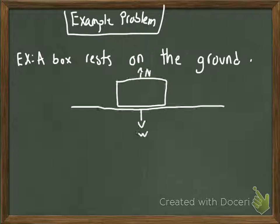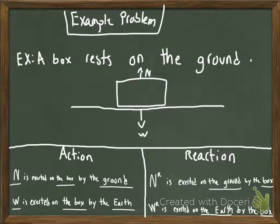Here is a free body diagram for the action forces in this scenario. The normal force points upwards while the weight points downwards towards the earth. Therefore, you would say for action forces that normal force is exerted on the box by the ground, and weight is exerted on the box by the earth.